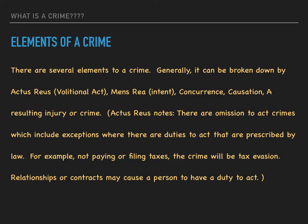Sometimes an omission to act when you have an obligation would satisfy the element of doing the act. For example, by federal law you have to file taxes if you earn more than $9,000 a year. If you earned $30,000 before deductions and you didn't file, you have a duty to act and you can be criminally prosecuted for tax evasion unless you have a really good defense.